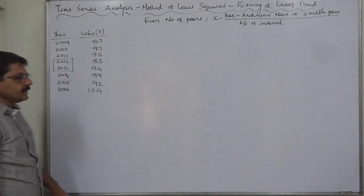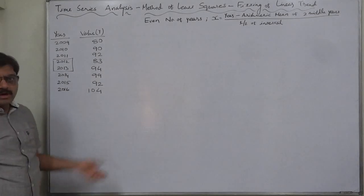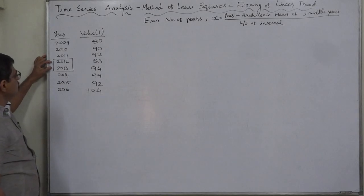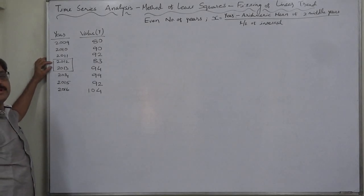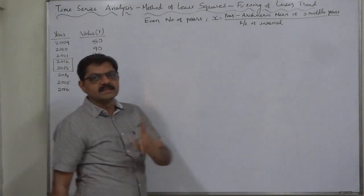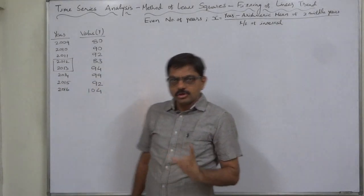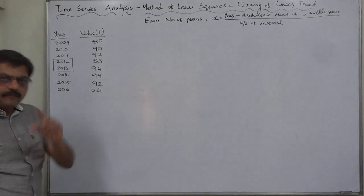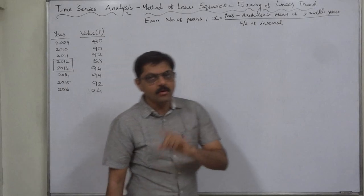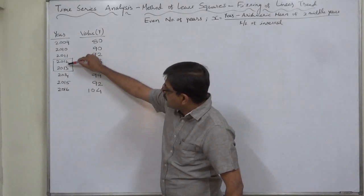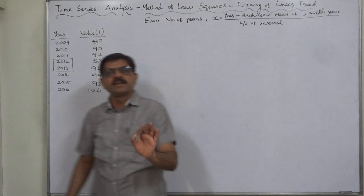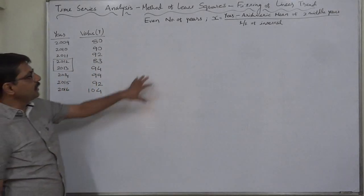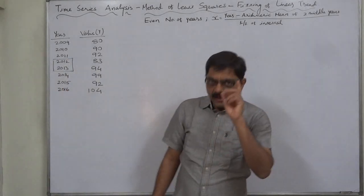It's very easy to get the origin when there are odd number of years. But in case of even number of years, we use the idea of mean of the two middle years, because origin should be a single year. If there is no single year as a middle year, we have to take the arithmetic mean of the two middle years as the origin of the time series. That is the biggest difference between the cases having odd number of years and even number of years.